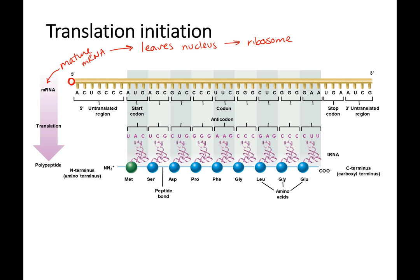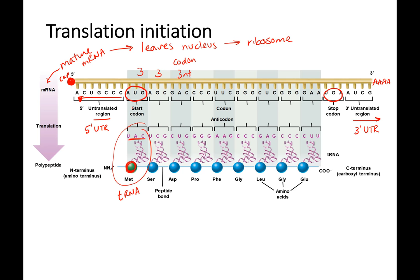For translation, you have your mRNA with a five prime cap and a three prime poly A tail. Your introns have been spliced out and your exons are now put together. What's important for translation is your start codon and your stop codon. All the RNA upstream of your start codon is called the five prime untranslated region; all the RNA downstream of your stop codon is called the three prime UTR. The mRNA sequence is read in groups of three nucleotides — that's a codon — and it is read by tRNA. tRNA binds an amino acid and has an anticodon that base pairs to the mRNA codon, and this all happens on the ribosome.